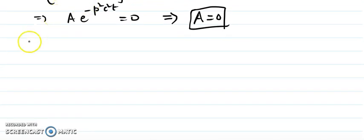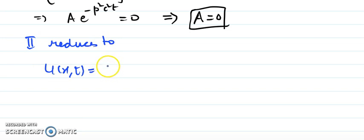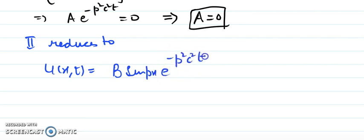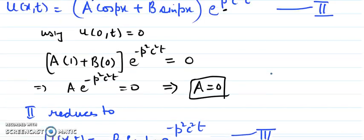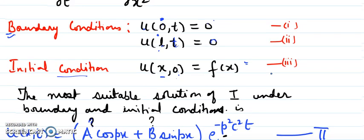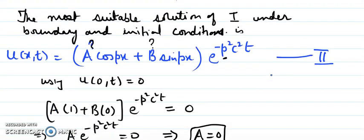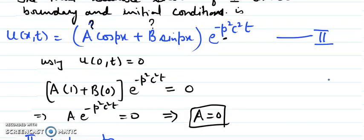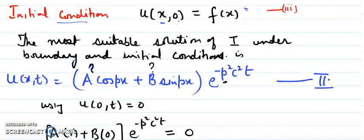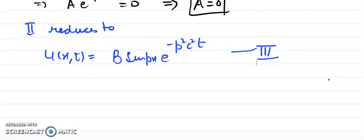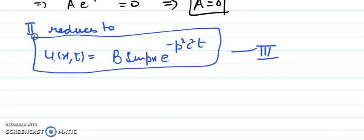With A = 0, the solution reduces to u(x,t) = B sin(px) · e^(−p²c²t), which I will call the updated solution. This is how we solve initial and boundary value problems: start with the general solution, plug in conditions one by one, and keep updating. After applying the first boundary condition, the coefficient of cos(px) is zero, so the solution reduces to B sin(px) · e^(−p²c²t).